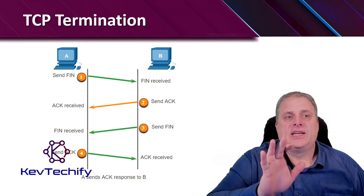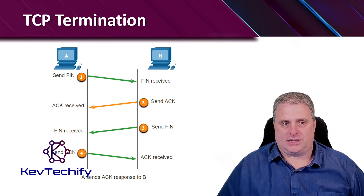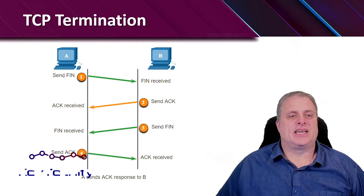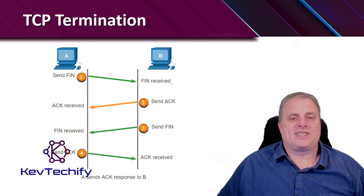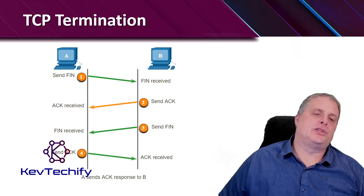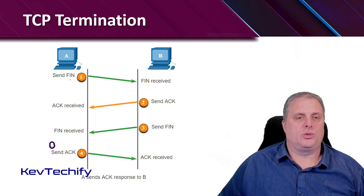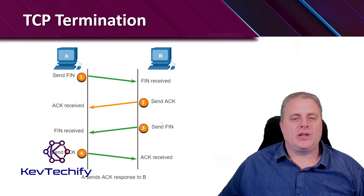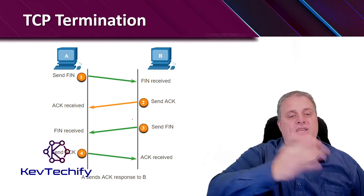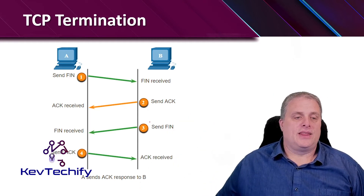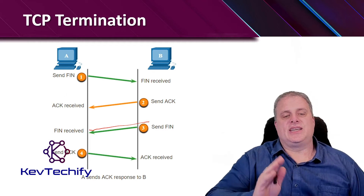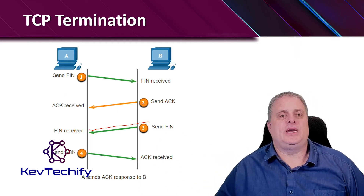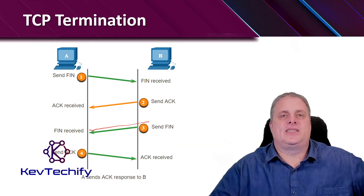To terminate a TCP session, it's a four-way exchange process. PCA sends a finish request to PCB. The server receives that finish request and sends an acknowledgement back, terminating communication in one direction. PCB also sends a finish request to terminate communication going from B to A. PCA receives that finish request and sends the acknowledgement back to PCB, terminating the two-way TCP connection.